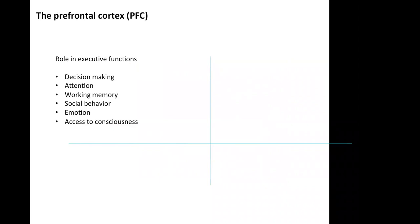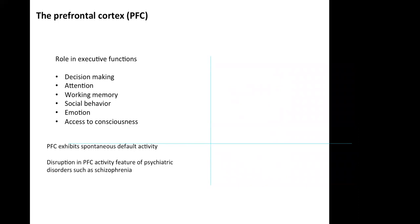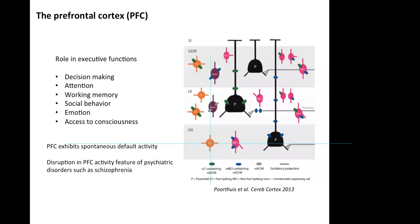The prefrontal cortex plays a major role in cognitive functions such as decision-making, attention, working memory, social behavior, emotion, and access to consciousness. It exhibits spontaneous default activity, and disruptions in prefrontal cortex activity are believed to be a main feature of psychiatric disorders such as schizophrenia. Nicotinic receptors activate the prefrontal cortex in a layer-specific manner: in superficial layers, nicotinic receptors are expressed only by interneurons, whereas in deeper layers they are expressed by both pyramidal cells and interneurons.